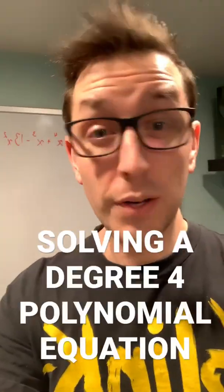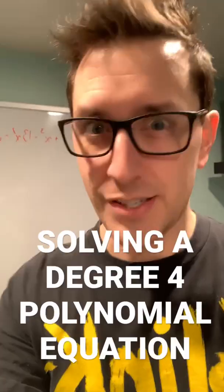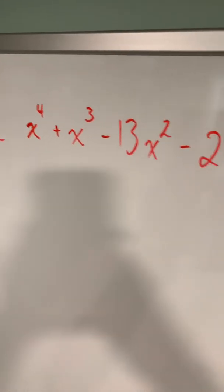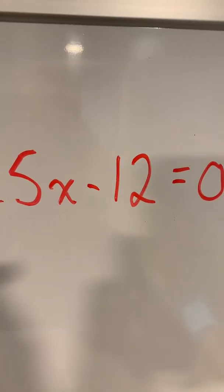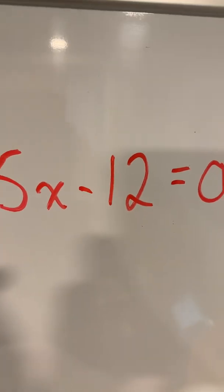Put that coffee on, because we're going to solve a degree 4 polynomial equation in under 60 seconds. We'll start by finding an x value that makes this polynomial equal to 0, and we can do that by looking at factors of the term without an x.